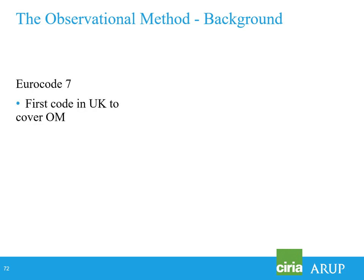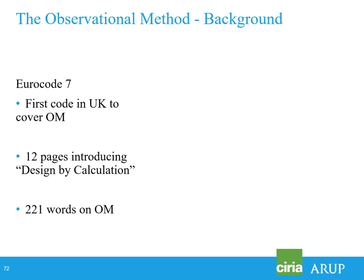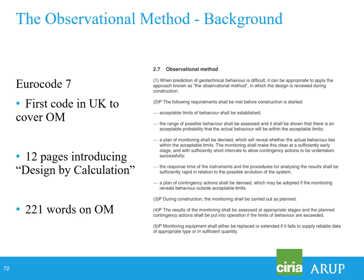What did Eurocode 7 say about the observational method? It's the first code I'm aware of in the UK that covered it. But if there are 12 pages in Eurocode 7 describing design by calculation, there are only 221 words on the observational method. So it doesn't quite have the same significance or amount of guidance. The benefits include improved safety control — it's more safe, not more dangerous, because people are continuously looking at data and comparing it to predictions — and there's control of design uncertainties, greater connection between designers and contractors, improved construction control and management, and greater motivation for the project team.